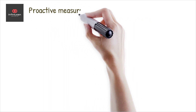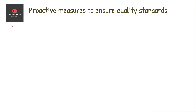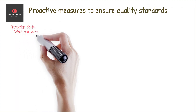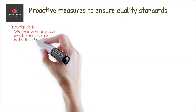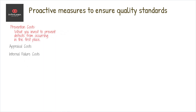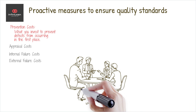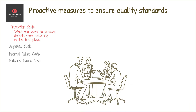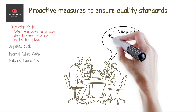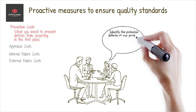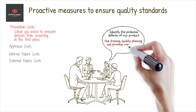Firstly, prevention costs are what you invest to prevent defects from occurring in the first place. These proactive measures, like training, quality planning, and process improvement, help ensure your products or services meet the desired quality standards. The idea is that spending money here saves you from much higher expenses later on.